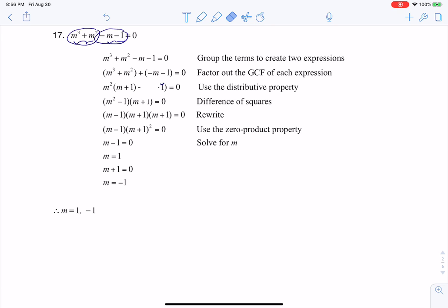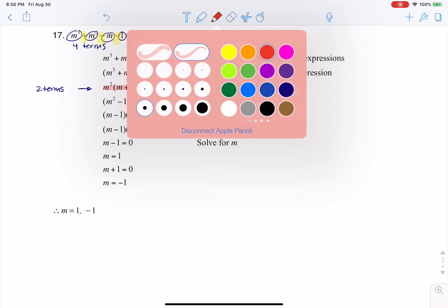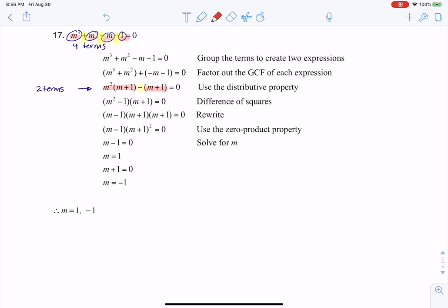What I've ultimately done is I started this problem with four terms - one, two, three, four - separated by three operators: addition, subtraction, subtraction. Now I've gotten to this line where I have two terms separated by one math operator.